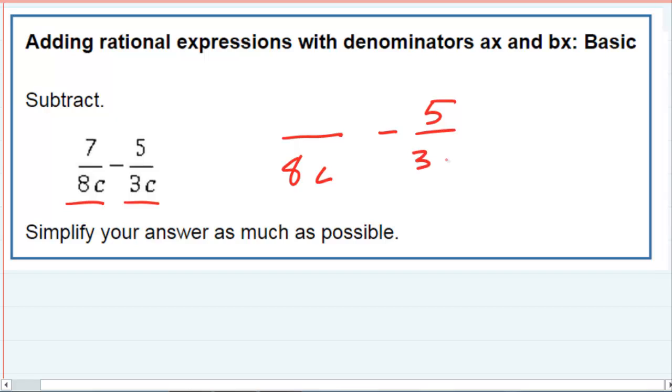We will have to first get a common denominator between those two. So looking at those two, the 8c and the 3c, they both have a c, so they have that in common. Nothing needs to be fixed as far as that goes.